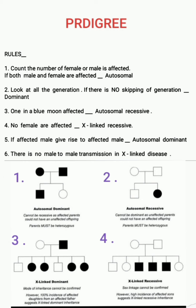One in a blue moon means not all generations are affected, just one is affected — so this is autosomal recessive. Rule number four: if no females are affected, that is an X-linked recessive disorder. We check all the generations, and if no female is affected, we say it is X-linked recessive.